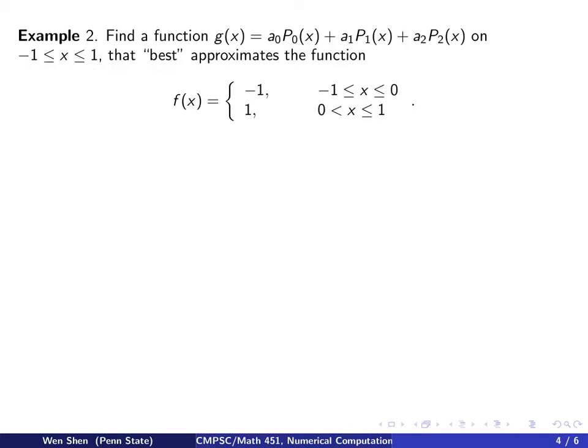And now we want to find a function g, which is a linear combination of the first three Legendre polynomials on the interval from negative 1 to 1. We would use the function g to best approximate the following function, f of x, which is negative 1 on the interval from negative 1 to 0, and 1 on the interval from 0 to 1. So note that this function is not continuous at x equal to 0. So when we say best approximates, we mean in the least square sense.